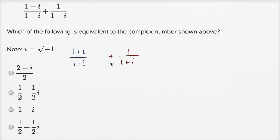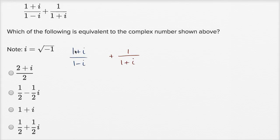We're able to add two fractions if we have the same denominator. We can get the same denominator if we multiply both the numerator and the denominator of each fraction by the other's denominator. This is the way you've always added fractions with unlike denominators — we're just finding a least common multiple, and the easiest one is just multiplying the denominators.